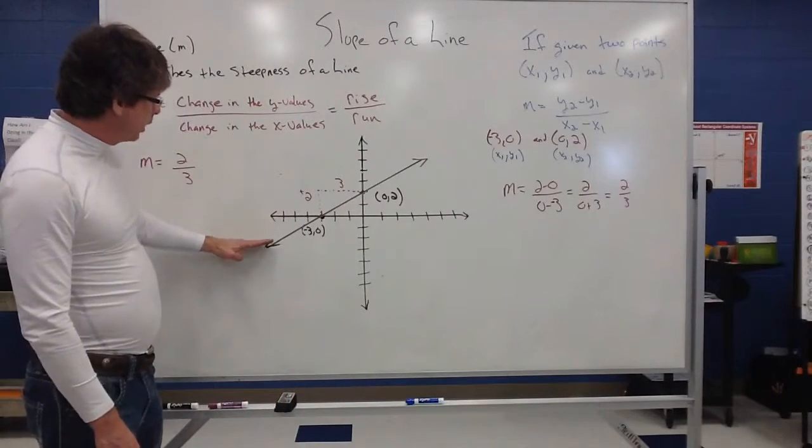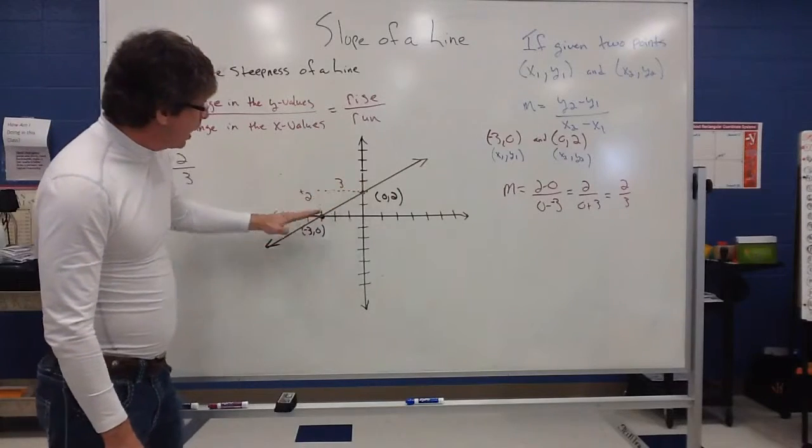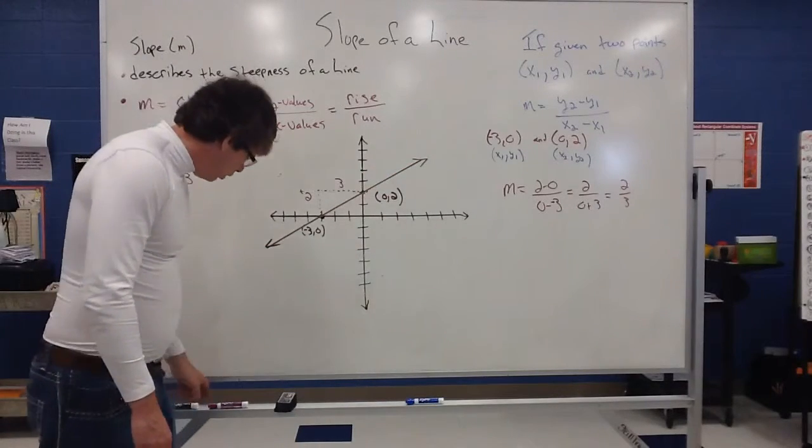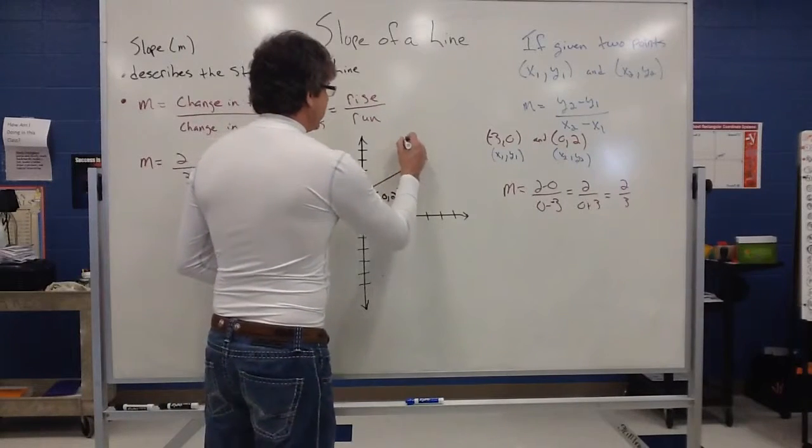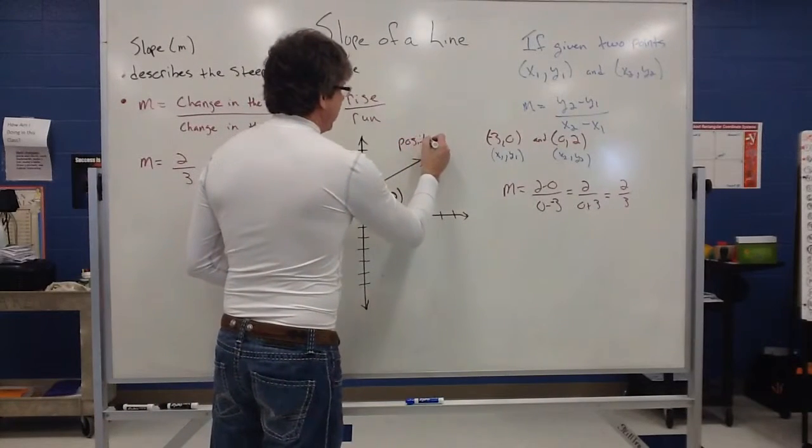Also, notice that this line, if I'm going from left to right, is kind of going up. We call that a positive slope. So, this line here is said to have a positive slope.